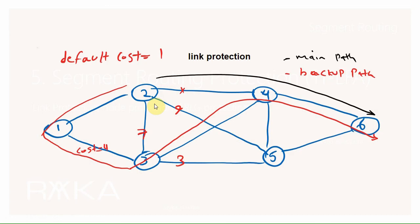How does segment routing help with post-convergence path protection and prevent this loop? Thanks to segment routing, the backup path or segments can be encoded in the packet itself. So when the R2–R4 link fails, R2 gives the packet to R1, and when R1 receives the packet, from the segment encoded inside the packet it knows the packet should be forwarded to R3, not back to R2. So there will be no loop. The backup path is encoded in the packet itself when a link or node fails, and there will be no loop in a segment routing network.